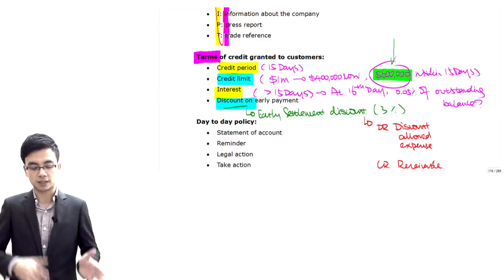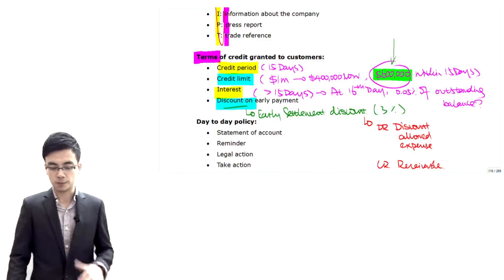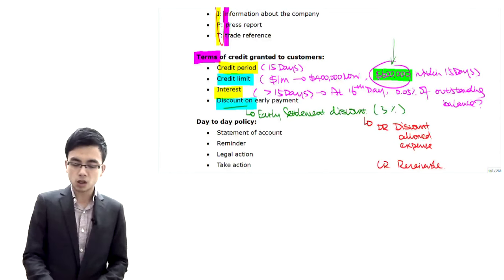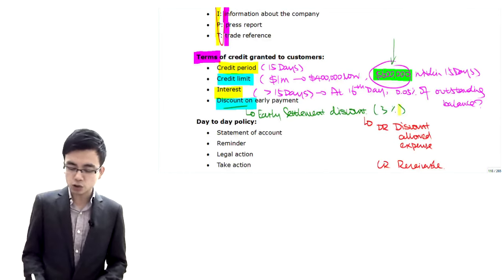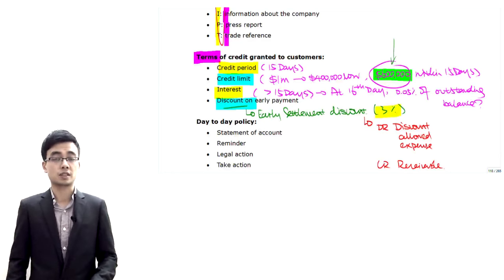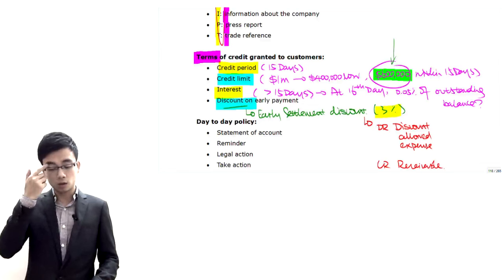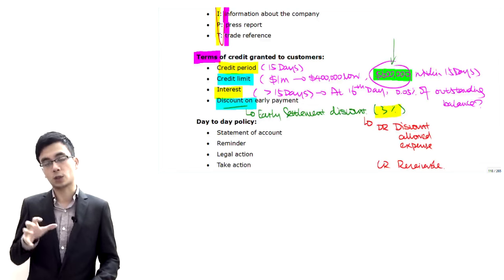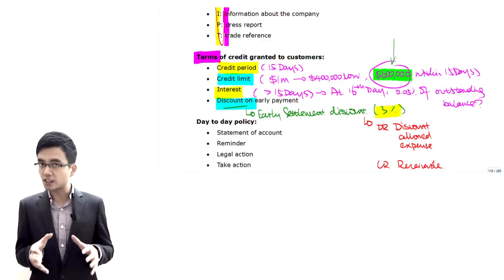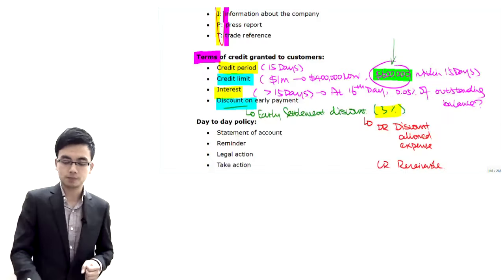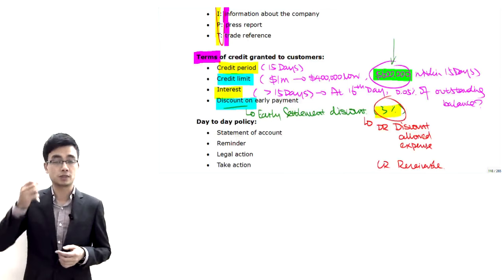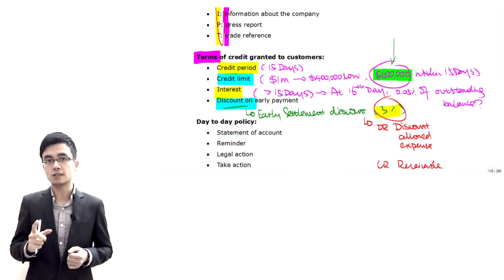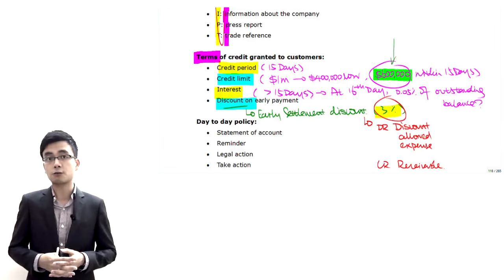A question you may have: how should we decide whether to offer the early settlement discount? From the company's perspective, if you want to motivate your customer to pay early, how should you set that discount? For example, at 3% or 4%? We will look at the criteria for determining that percentage shortly.